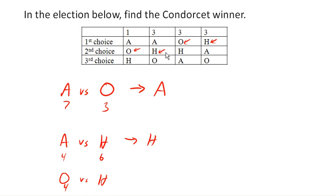So notice something really interesting here. H is preferred by the majority over A. H is preferred over O, if those were the only options. And yet, our winner under plurality method is A.